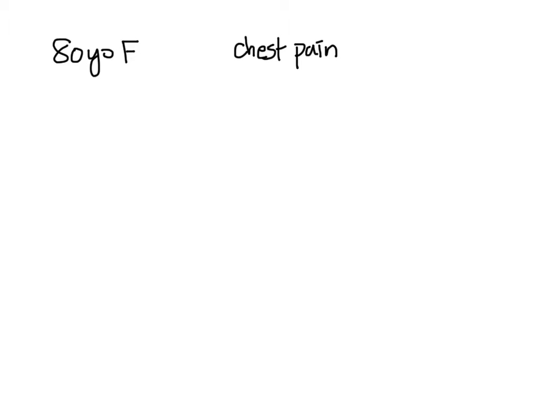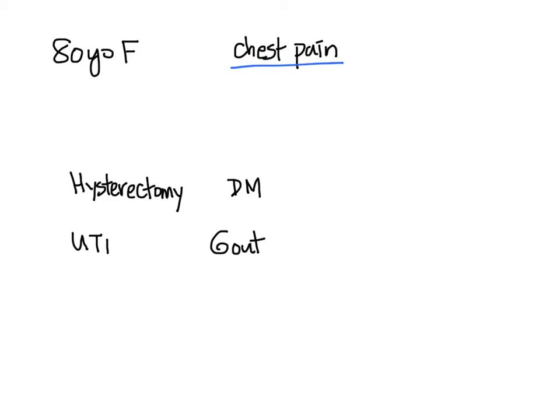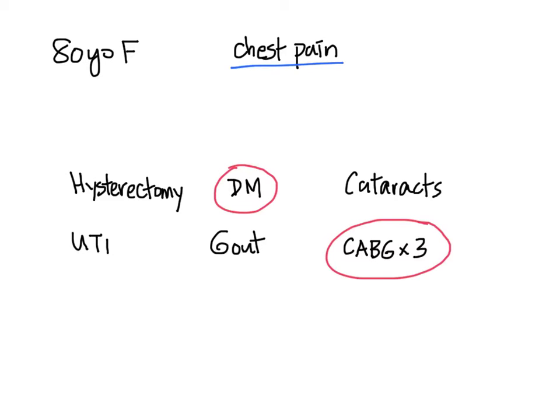Let's work this out with a few examples. Let's say your patient is an 80-year-old female who complains of chest pain. The chief complaint would be chest pain. In your interviewing, you realize the patient has the following past histories: a hysterectomy at age 50, frequent UTIs, diabetes, gout, cataract surgery, and a history of triple coronary artery bypass surgery. In the one-liner, which medical conditions do you think would set the stage for the patient who has this chief complaint? It would be both diabetes and CABG.